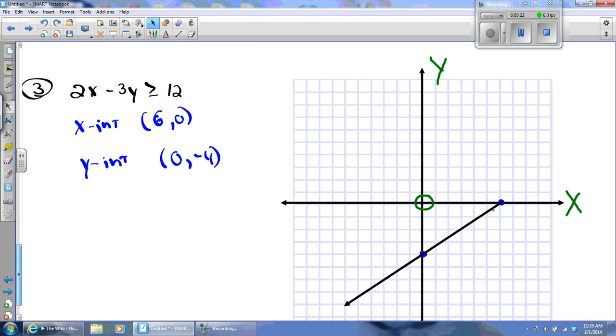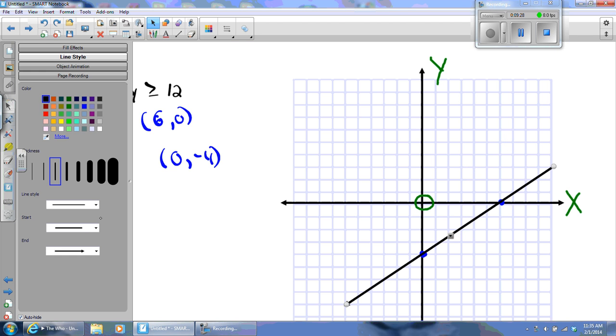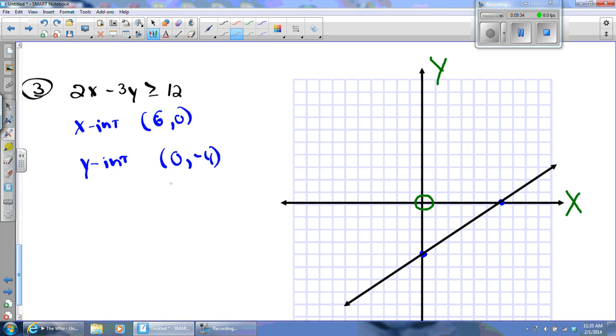And now I'll have to pick my test point to see which side of the line I should shade. So can I pick the origin? I sure can. Bradley, why can I pick the origin? Yes, exactly. Because the line does not go through it. The only time I can't use the origin as my test point is if the line goes through the origin. It'll give me a false reading. So I don't pick any point that the line is on. I can pick any point on the graph. I like the origin because it makes the math simple.